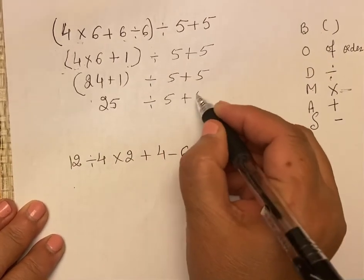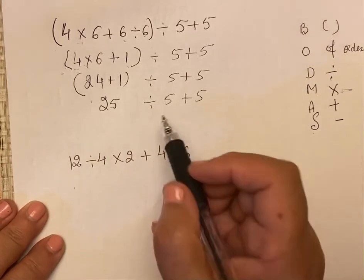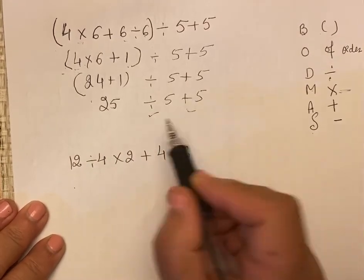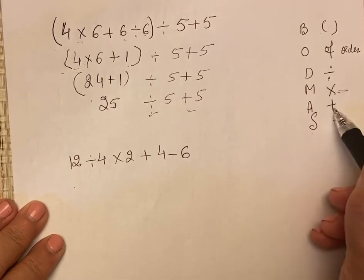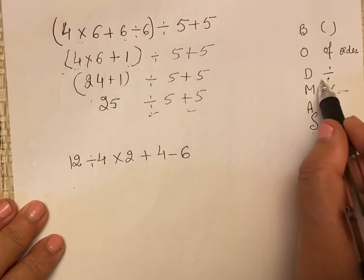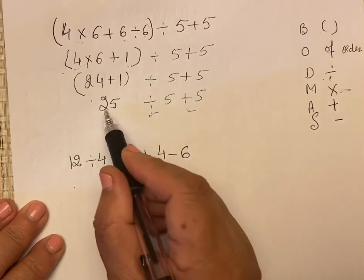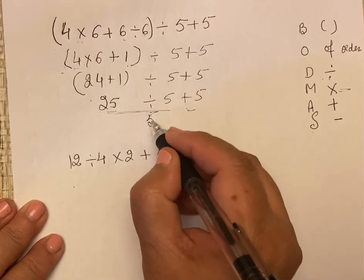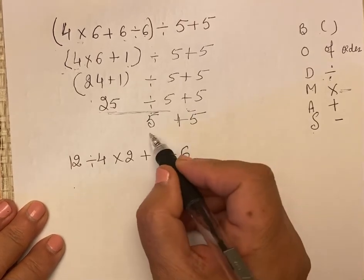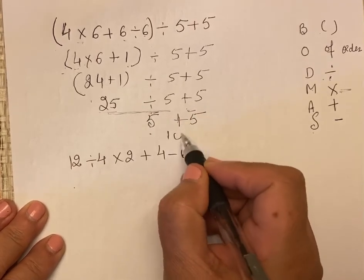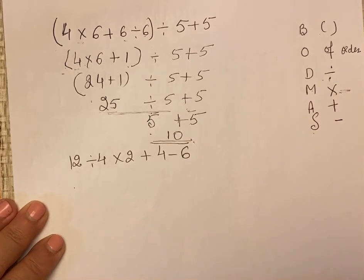So what else is left? Now we will see, there are two signs: division and addition. Out of these two, priority goes to division. So 25 divided by 5 is equal to 5. 5 plus 5. Now there is only one sign. 5 plus 5 is equal to 10. Answer comes to 10.